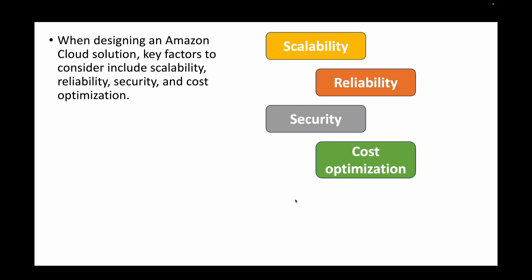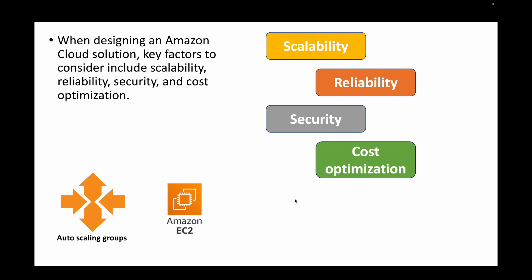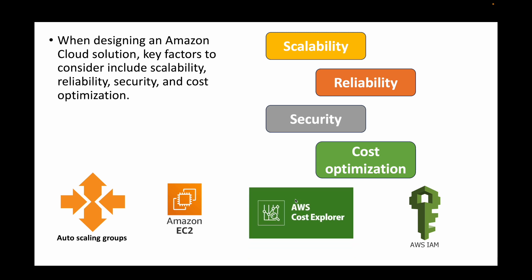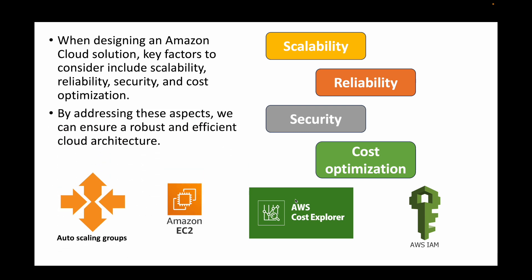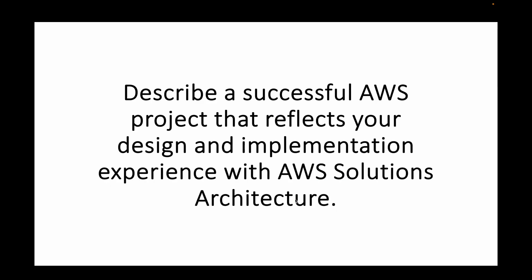In terms of AWS services: for scalability we can use auto scaling groups; for reliability we can use EC2 instances; for security we can use AWS IAM; and for cost optimization we can use Cost Explorer. We also have AWS Budgets, Trusted Advisor for cost, and VPC and IAM for security. By addressing these aspects we can ensure a robust and efficient cloud architecture.